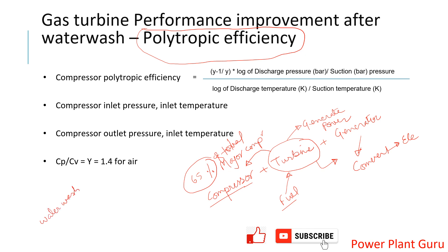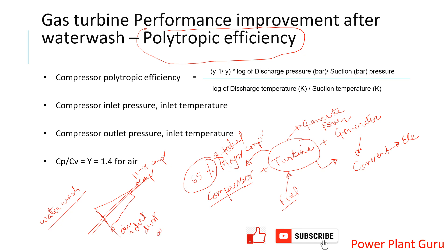There is another related concept — water wash. In a compressor, air enters at atmospheric pressure and compressed air exits. In a gas turbine, the compression ratio may be around 11 to 13. A large volume of air is pushed through the compressor blades, and this air brings dirt, dust, aerosols, etc. These keep depositing on the blades, changing the blade profile, which causes compressor efficiency to deteriorate day by day.